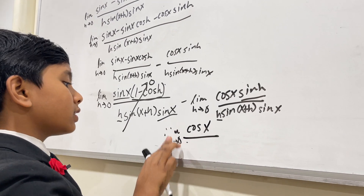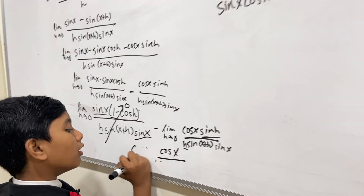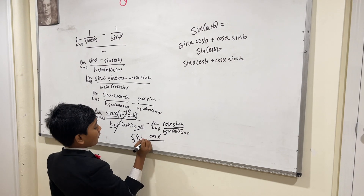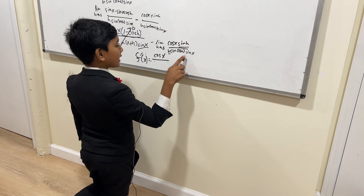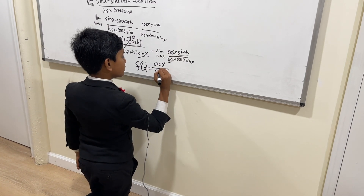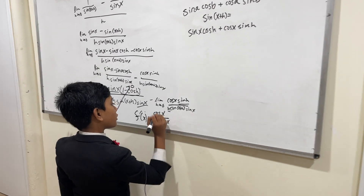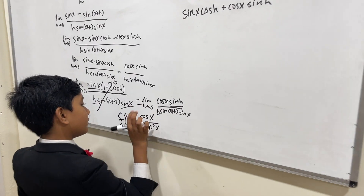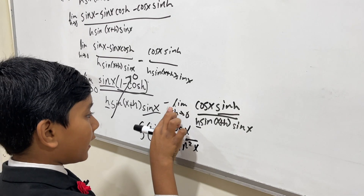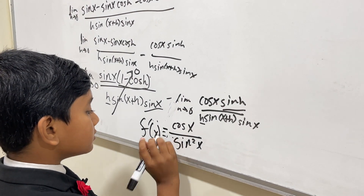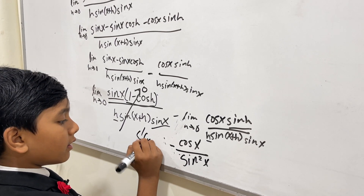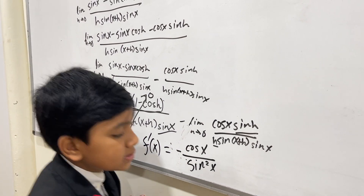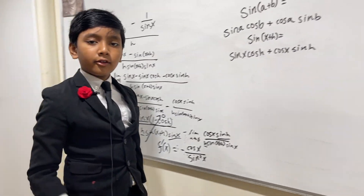Since we can set h to 0, we have the derivative equal to cosine(x) over sine(x) times sine(x), which is sine squared(x). And don't forget the negative sign we had to tack on beforehand, so that becomes negative cosine(x) over sine squared(x). That's it — thank you everybody for watching, we'll see you in the next one.